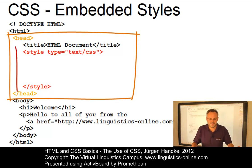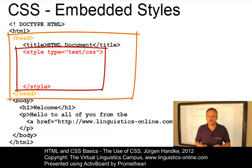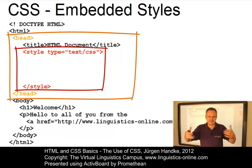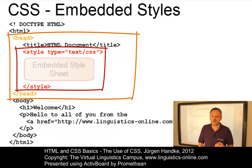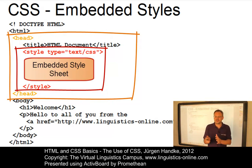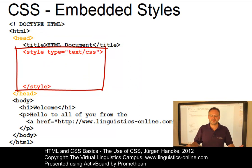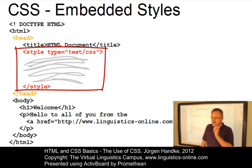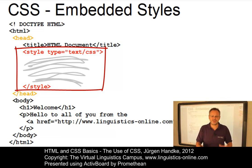The style tag with the attribute type and the value text CSS defines the availability of a so-called embedded or internal style sheet. Within the style tags, we can now list as many style definitions as required.